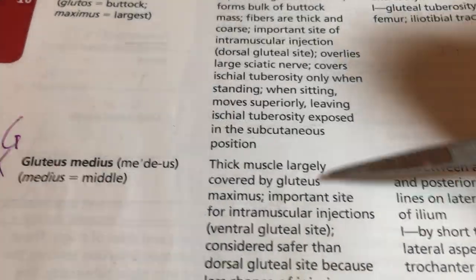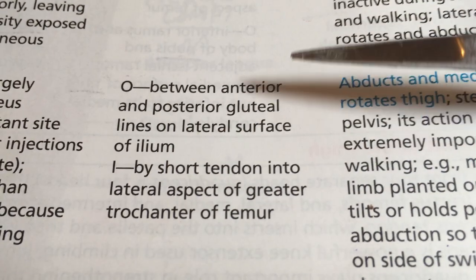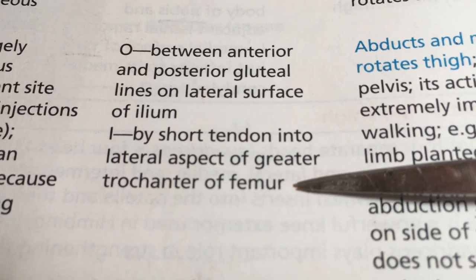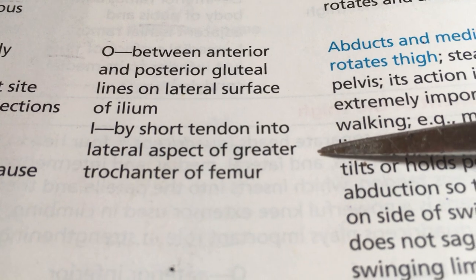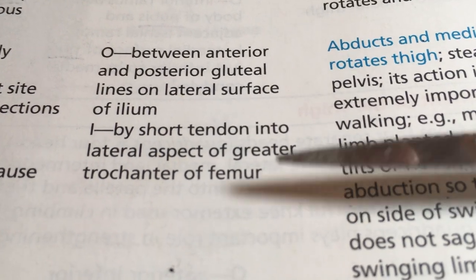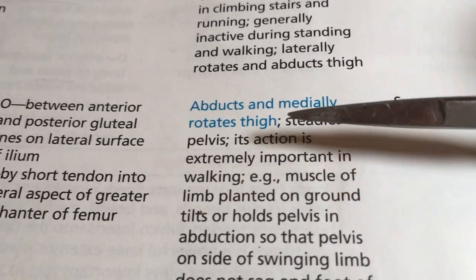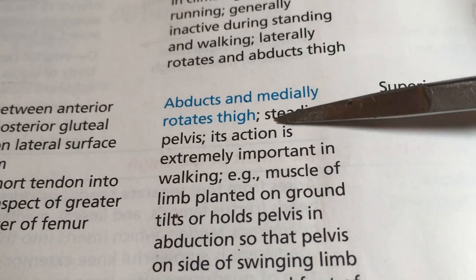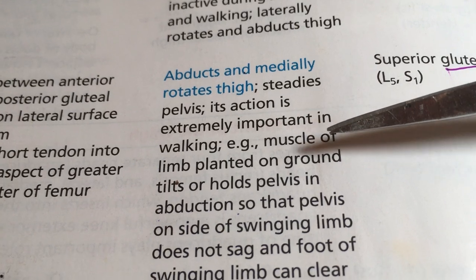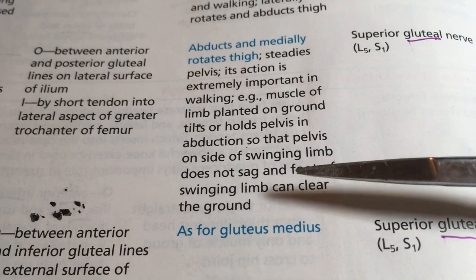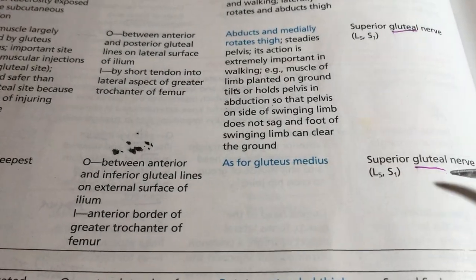Gluteus medius originates on the gluteal lines of the ilium and inserts by a short tendon to the greater trochanter of the femur — that bump on the side of your femur. Innervated by the gluteal nerve, its action is abduction and medial rotation, which together create a lift so you can swing the limb. The key function: do not sag. Gluteus minimus has the same function.